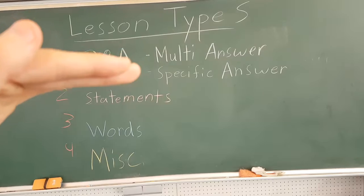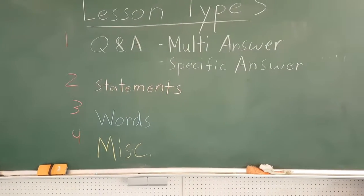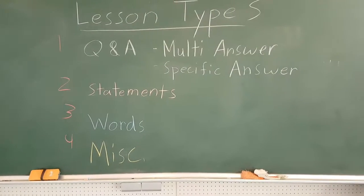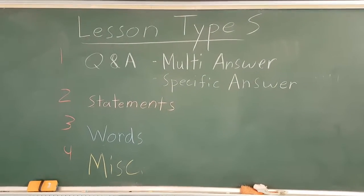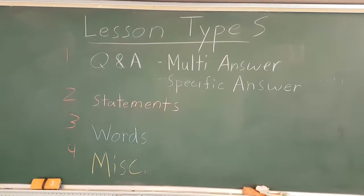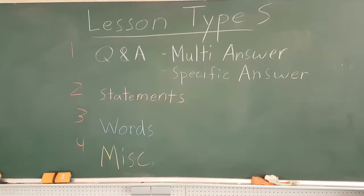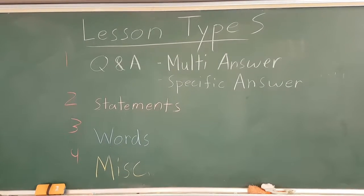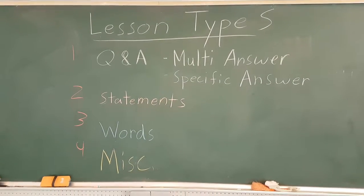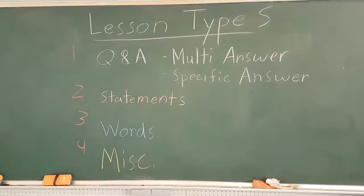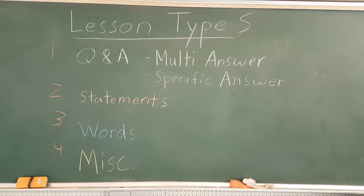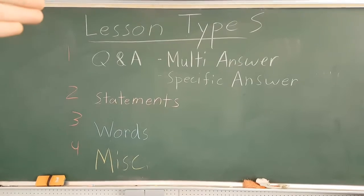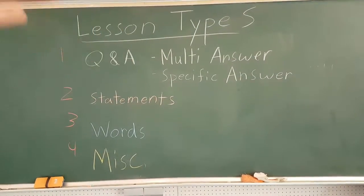Underneath multi-answer, you have the specific answer. An example of this is what's your name? My name is Philosophlix. You have one answer. When you teach a lesson like this, you have less to work with. It makes making a game for this harder. It makes teaching it shorter, meaning you have to fill in time more. It's really important to know that these are different and how they differ.